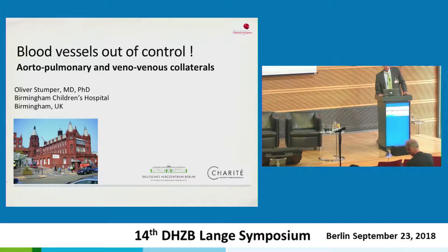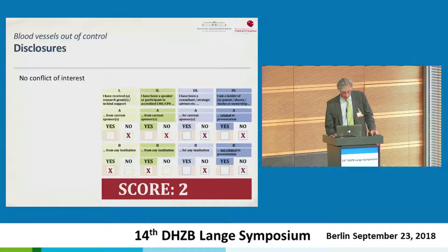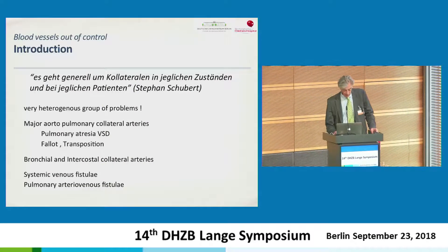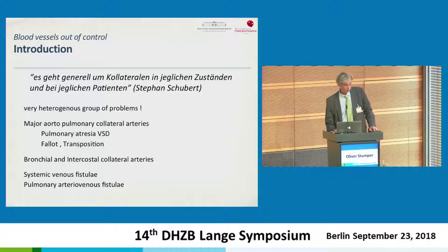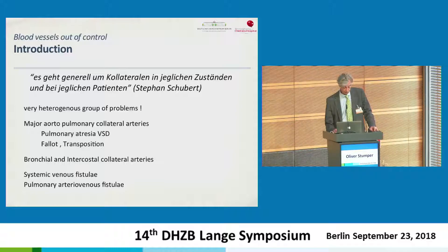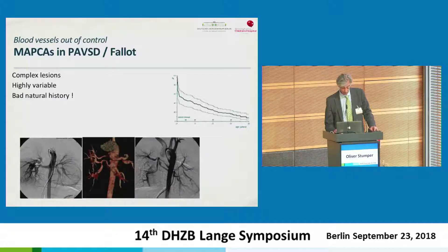Good morning ladies and gentlemen, it's a great pleasure to be here. I was asked to talk about aorto-pulmonary venous collaterals — blood vessels out of control. Stefan Schubert clarified this covers collaterals in all conditions and patients, which I thought was a bit vicious. Anyway, it's a very heterogeneous group of problems, and I want to touch on major aorto-pulmonary collateral arteries, bronchial and intercostal arteries, systemic venous fistula, and combined problems including pulmonary venous arteriovenous fistula.